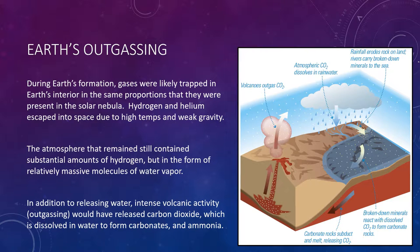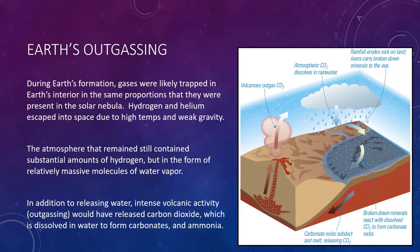Earth's gravity was too weak to prevent hydrogen and helium from escaping to space. The atmosphere that remained still contained substantial amounts of hydrogen, but in the form of relatively massive molecules of water vapor, H2O. In addition to releasing water, intense volcanic activity known as outgassing of this early period would have released carbon dioxide and ammonia. Carbon dioxide dissolved in rainwater and the oceans, where it combined with substances to form carbonates — limestone and marble being examples. These formed sediments on the ocean floor, which are eventually recycled via subduction, creating a cycle we've seen throughout Earth's history.